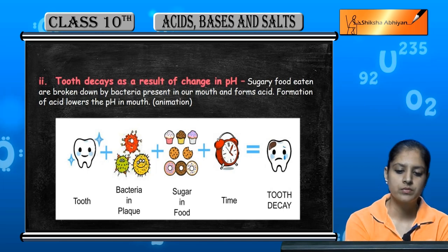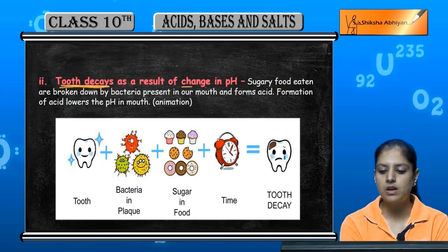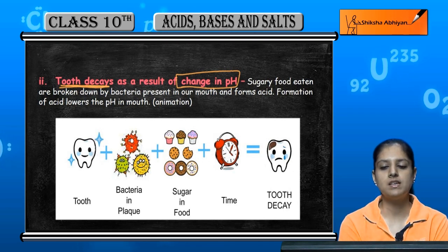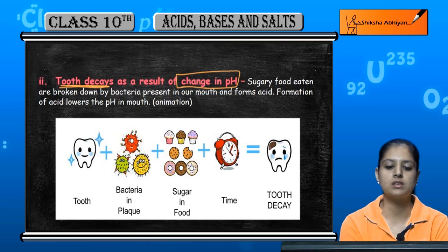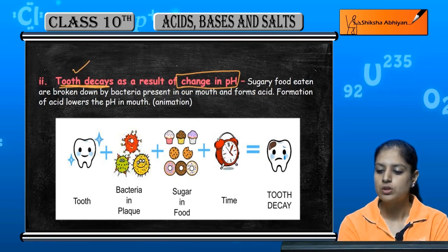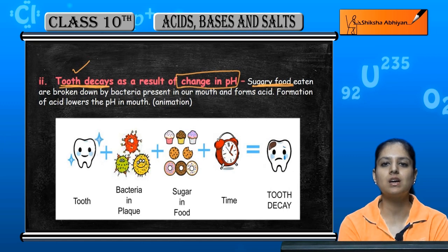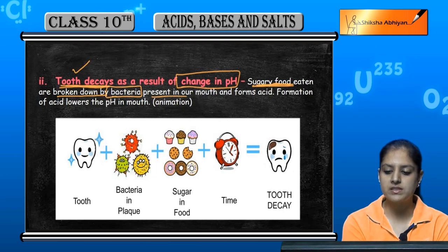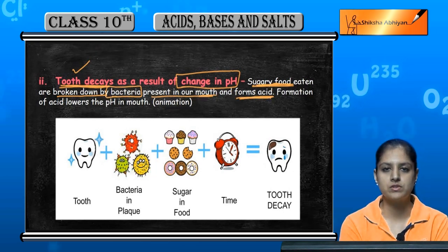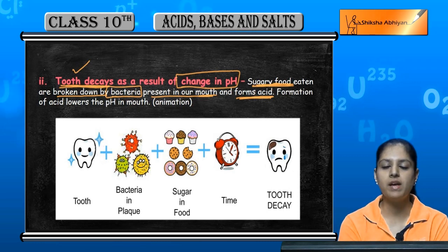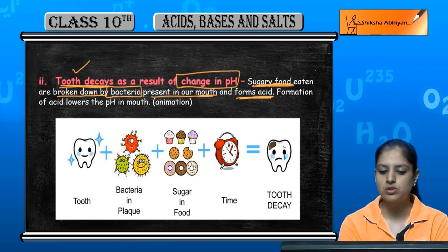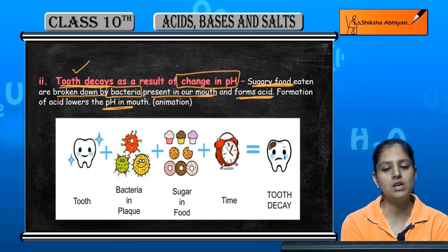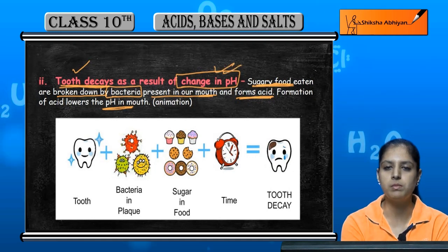Another important thing: tooth decay is a result of change in pH. When the pH in our mouth changes in daily life, tooth decay occurs. If we eat more sugary foods, those sugars are broken down by bacteria present in our mouth and form acid. This causes acid production in the mouth, so the pH will decrease.